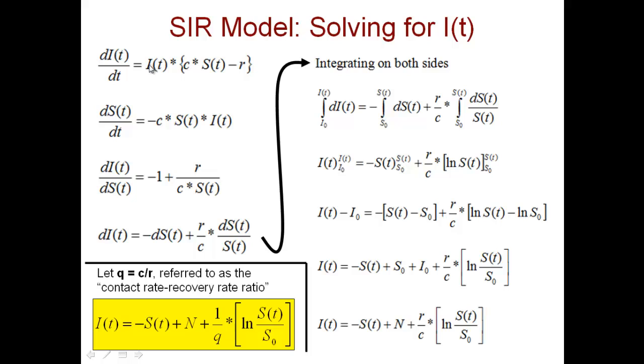dI(t)/dt is I(t) times c times S(t) minus r, and for dS(t)/dt we had minus c times S(t) times I(t).